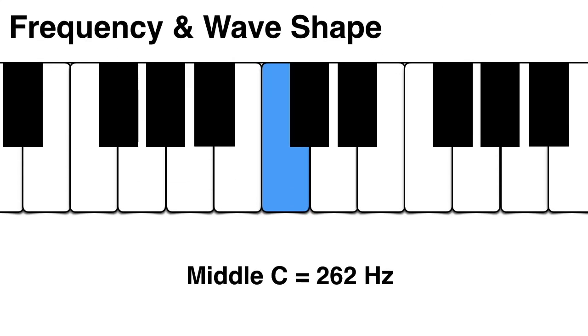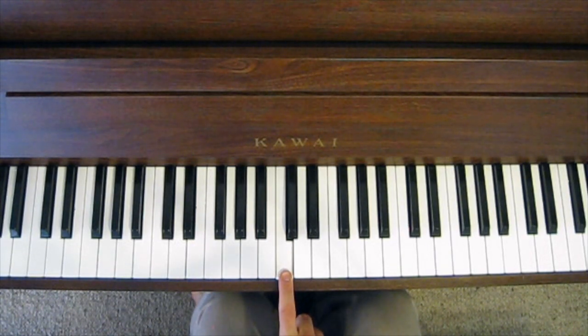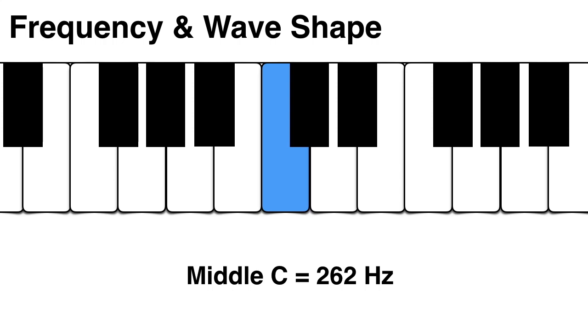When you play middle C on a piano, the frequency is 262 hertz. This means the string, and therefore the air, is vibrating back and forth 262 times per second.